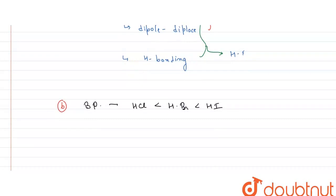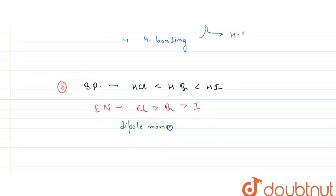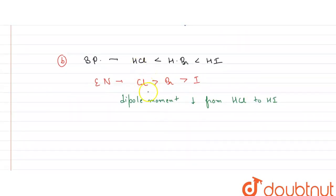Also we know that for electronegativity, chlorine is more electronegative than bromine and iodine is the least electronegative. That means dipole moment decreases from HCl to HI because dipole moment depends on the electronegativity. And since boiling point is inversely proportional to the dipole moment, that means boiling point increases from HCl to HI.